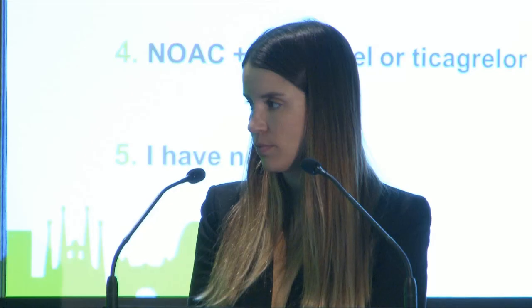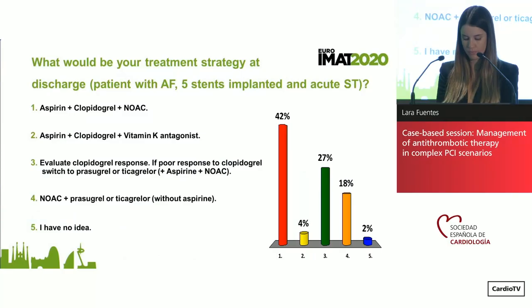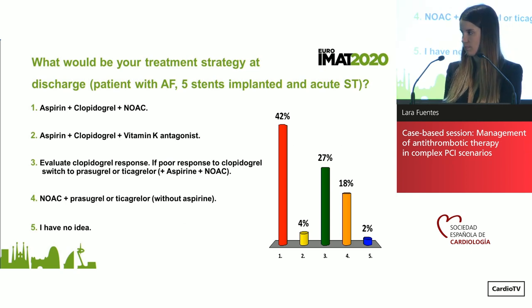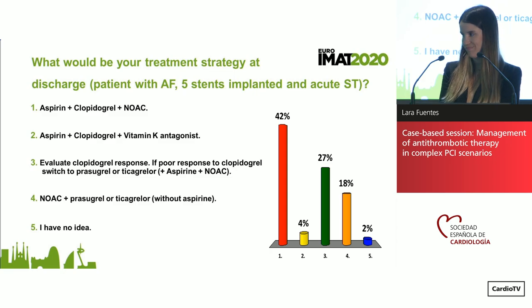Walter: I would go differently. Because of the many long stents, I would give a stronger P2Y12 inhibitor like ticagrelor together with the NOAC and leave out the aspirin. I know I'm not backed by major evidence. I would continue ticagrelor for about six months. If it were a shorter stented segment, I would keep it short — three months or maybe one month — and then continue on NOAC alone.